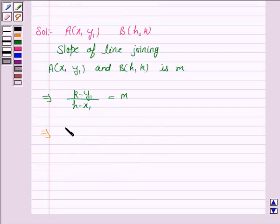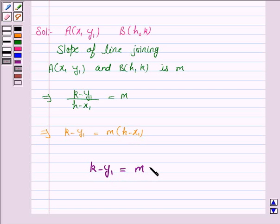And this implies k minus y1 is equal to m into h minus x1. Hence, we have proved that k minus y1 is equal to m into h minus x1.